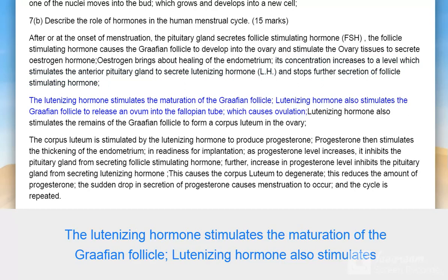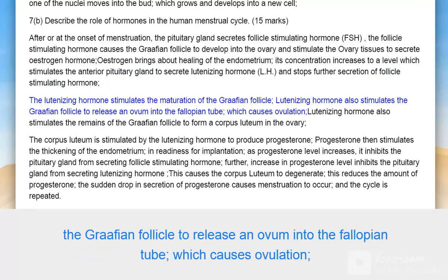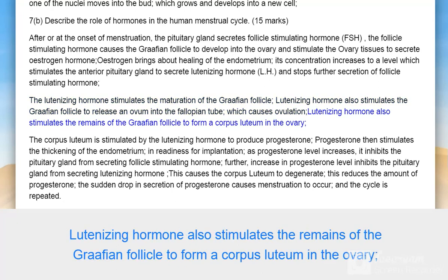Luteinizing hormone stimulates the maturation of the Graafian follicle and also stimulates the Graafian follicle to release an ovum into the fallopian tube, causing ovulation. Luteinizing hormone also stimulates the remains of the Graafian follicle to form a corpus luteum in the ovary.